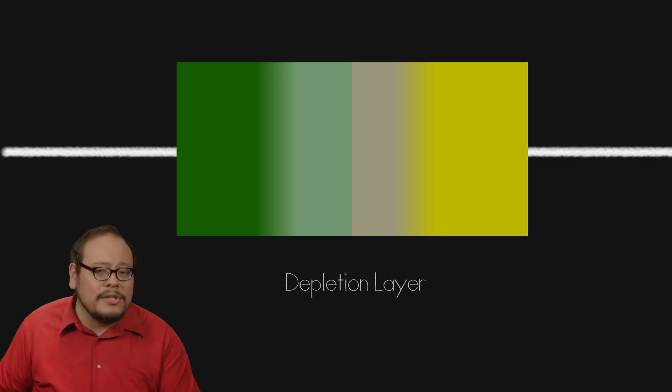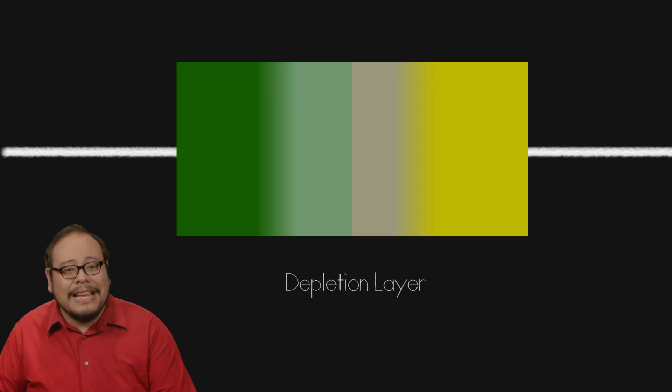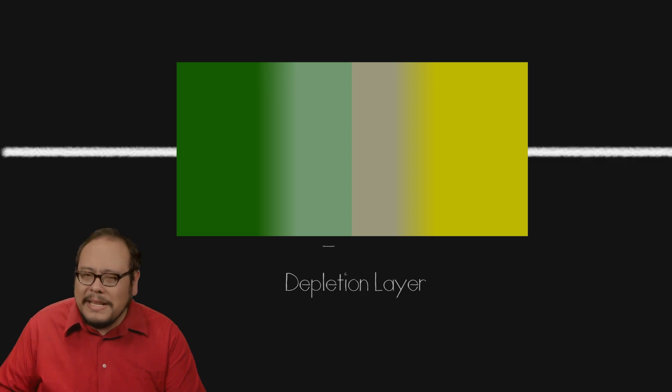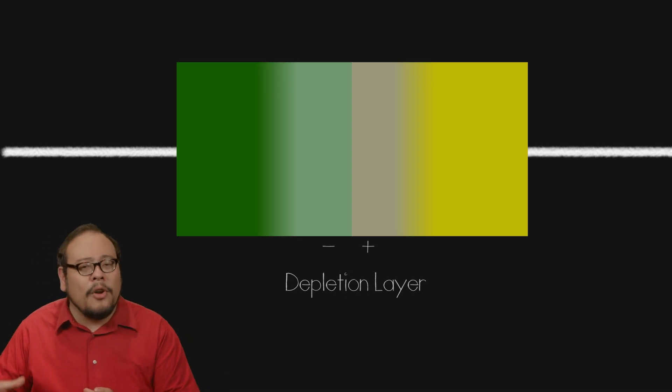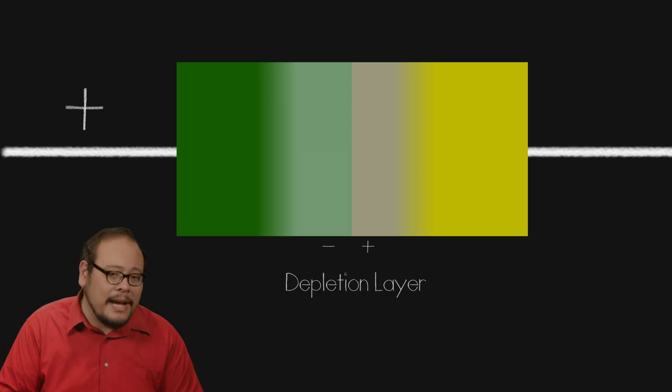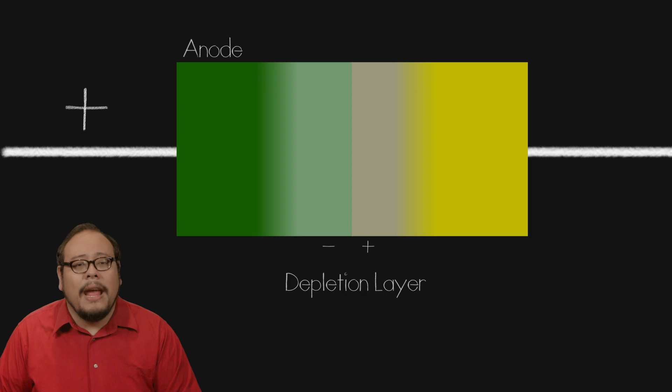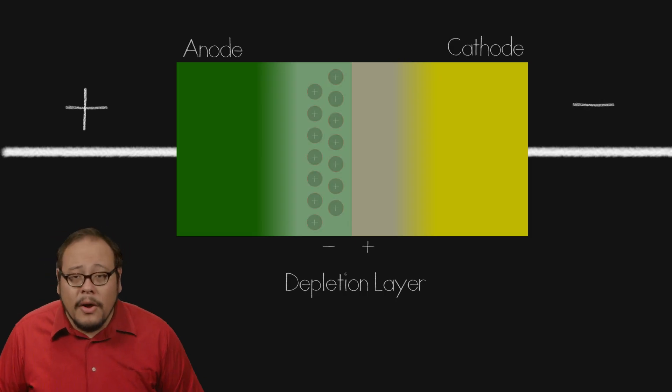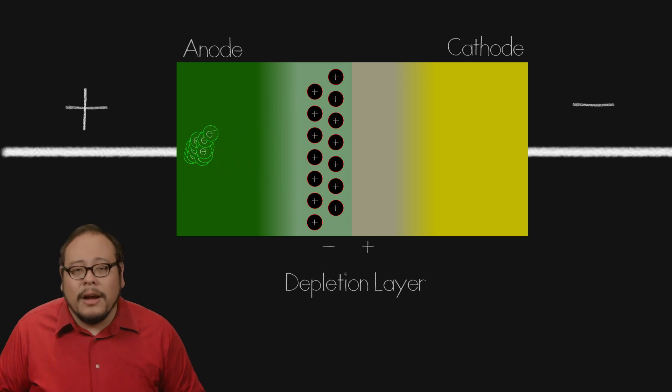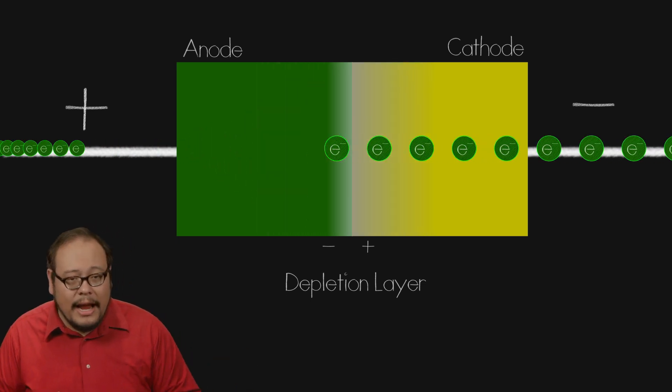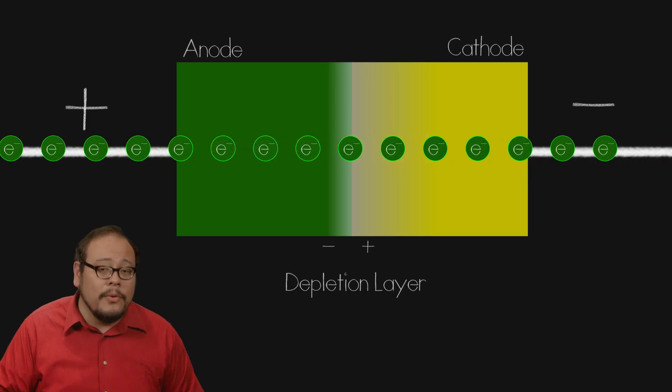Here the P-type material with its holes filled in with electrons is now negatively charged. And the N-type material, now missing its extra electrons, is positively charged. So if we connect the positive terminal of a battery to the P-type side or anode side and the negative terminal to the N-type side or cathode side, we start to draw electrons out of the holes in the depletion layer causing this depletion layer to shrink and the current to flow through the diode.